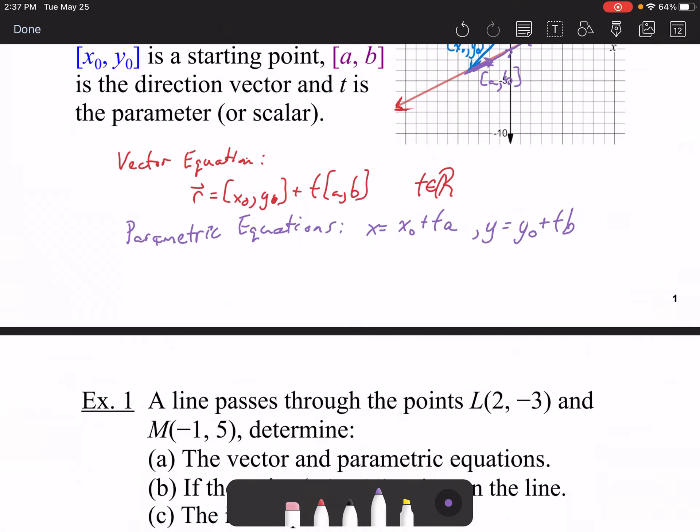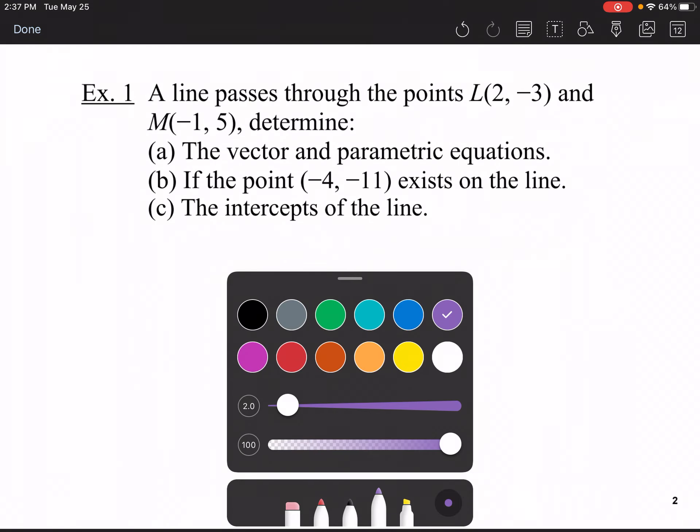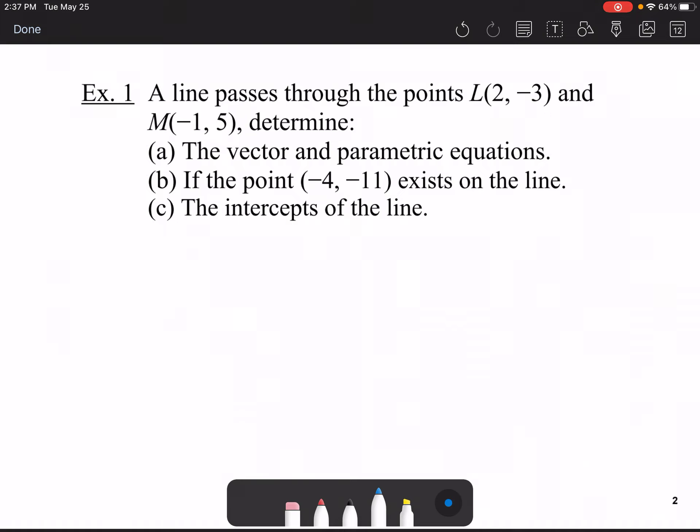So let's see how we can use this. Let's suppose we have a line that passes through the points L(2, -3) and M(-1, 5). We're going to determine the vector and parametric equations, determine if the point (-4, -11) exists on the line, and find any intercepts.